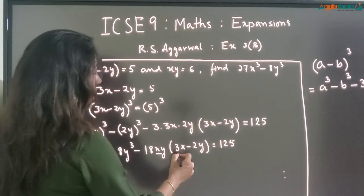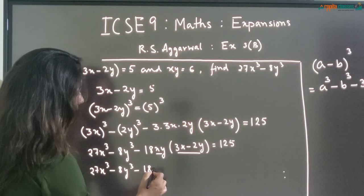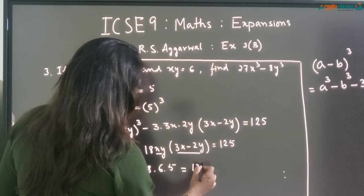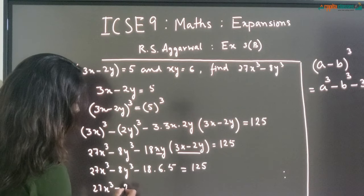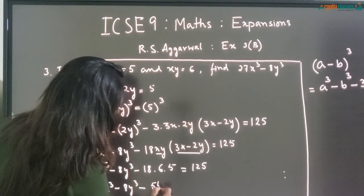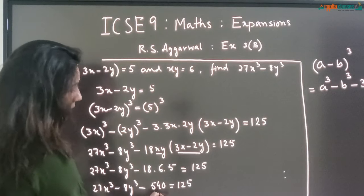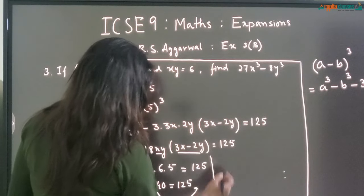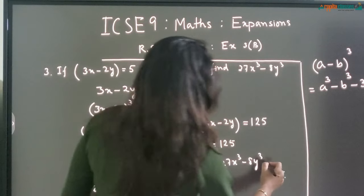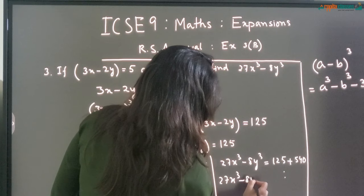Now we will put the values of XY and 3X minus 2Y. So this is 27X cube minus 8Y cube minus 18 into XY into 3X minus 2Y. The value of XY is 6 and 3X minus 2Y is 5, so 18 into 6 into 5 gives 540. So we get 27X cube minus 8Y cube minus 540 is equal to 125.